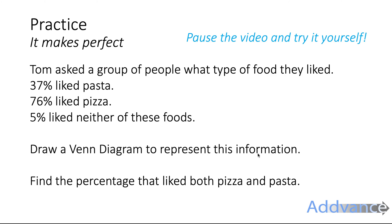Draw a Venn diagram to represent this information. Find the percentage that liked both pizza and pasta. Now you have to remember here that percentages must add up to 100. So all the numbers in the Venn diagram will add up to be 100% of course.